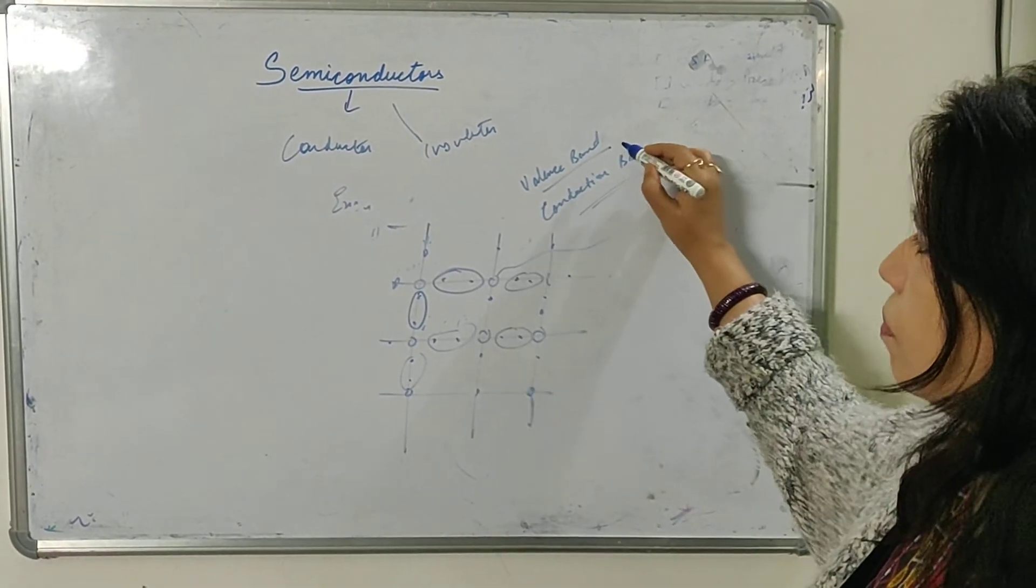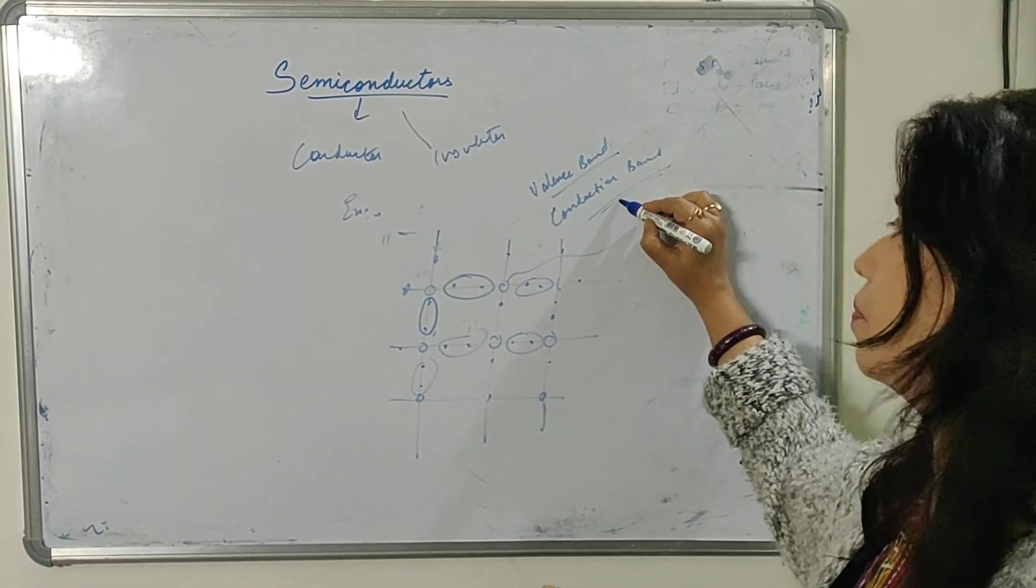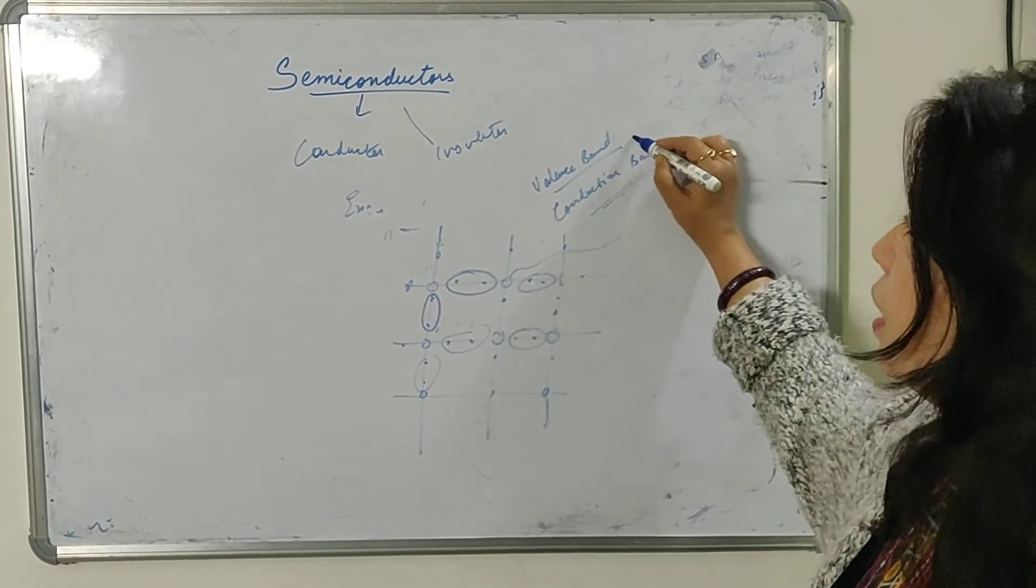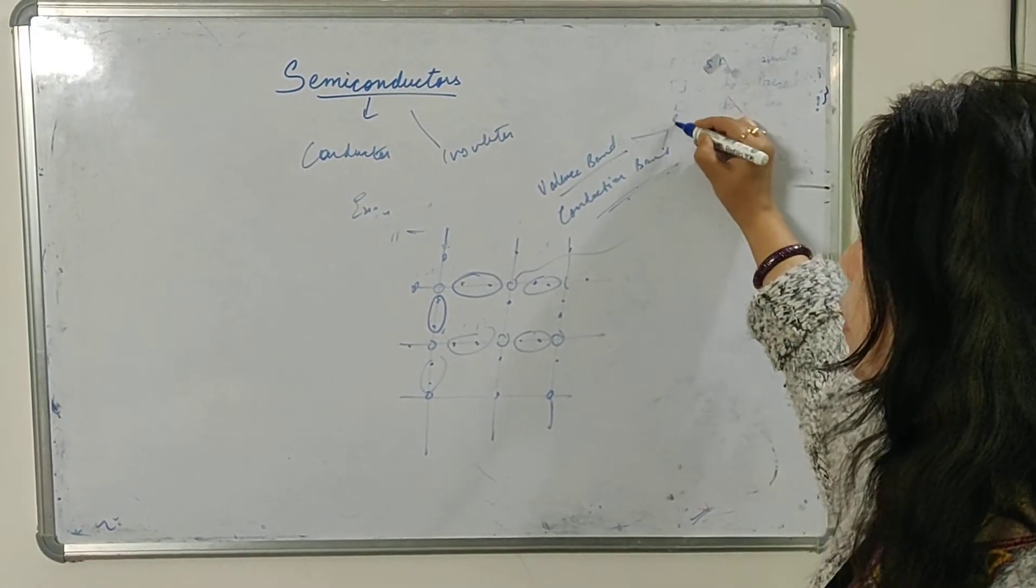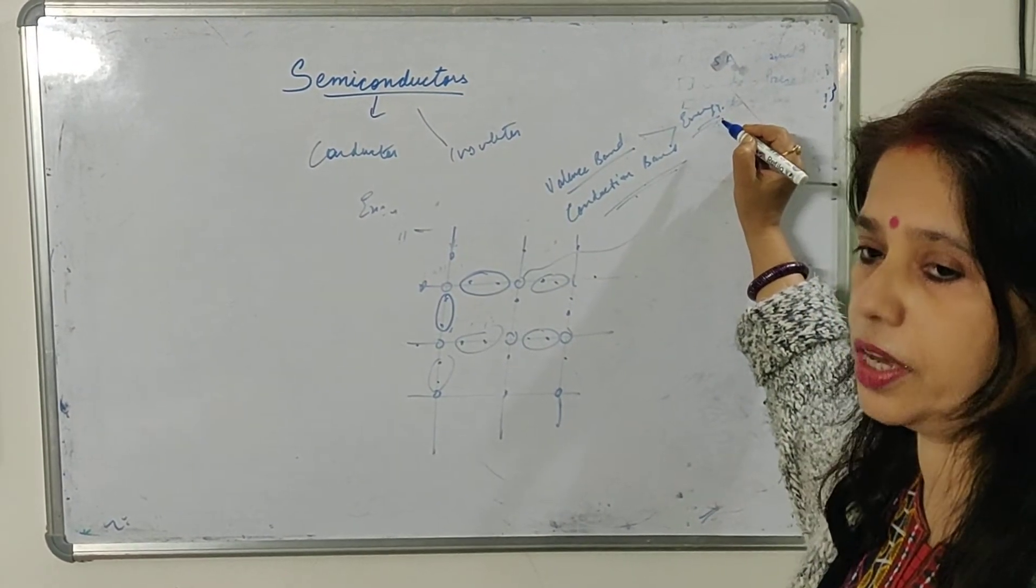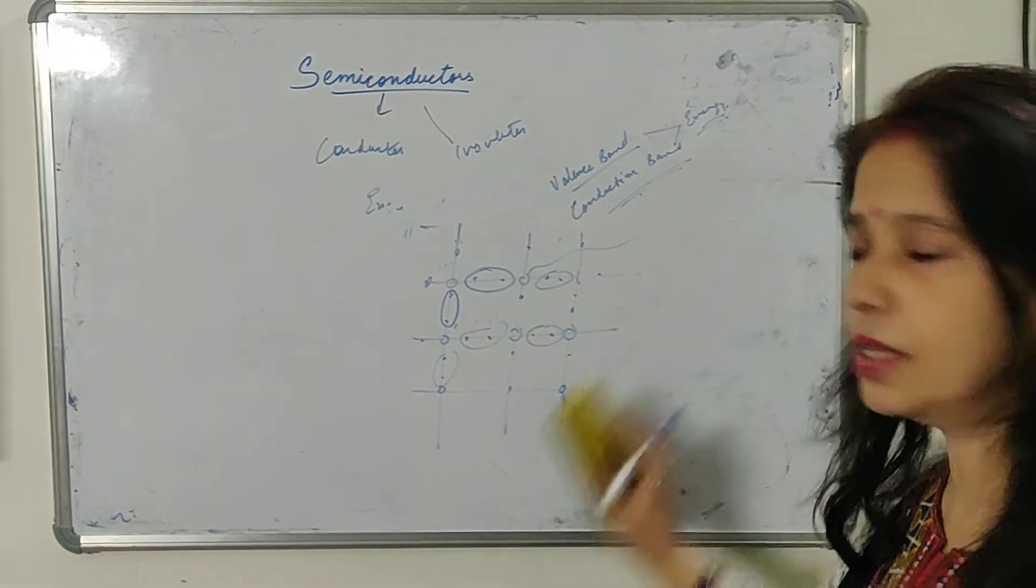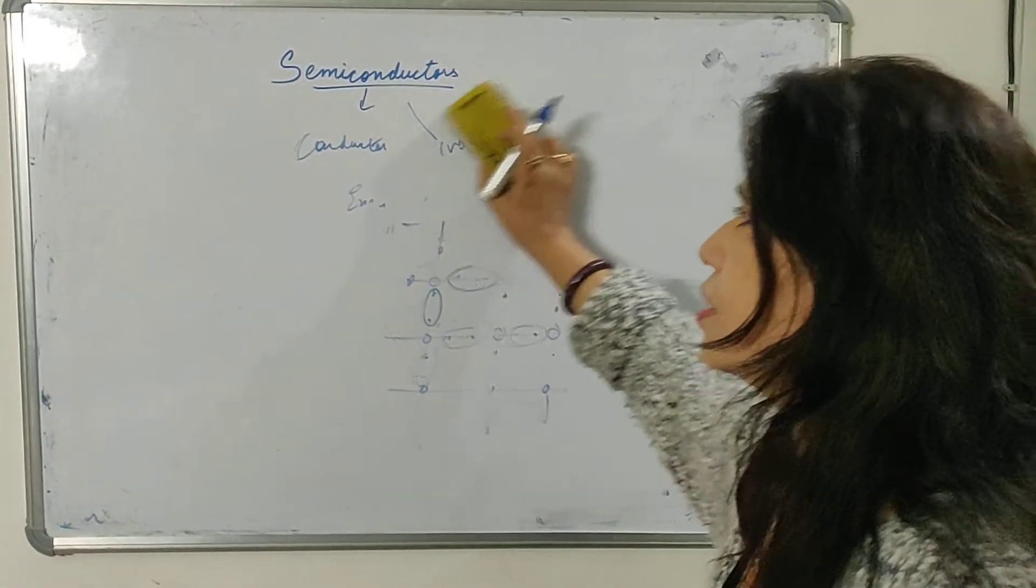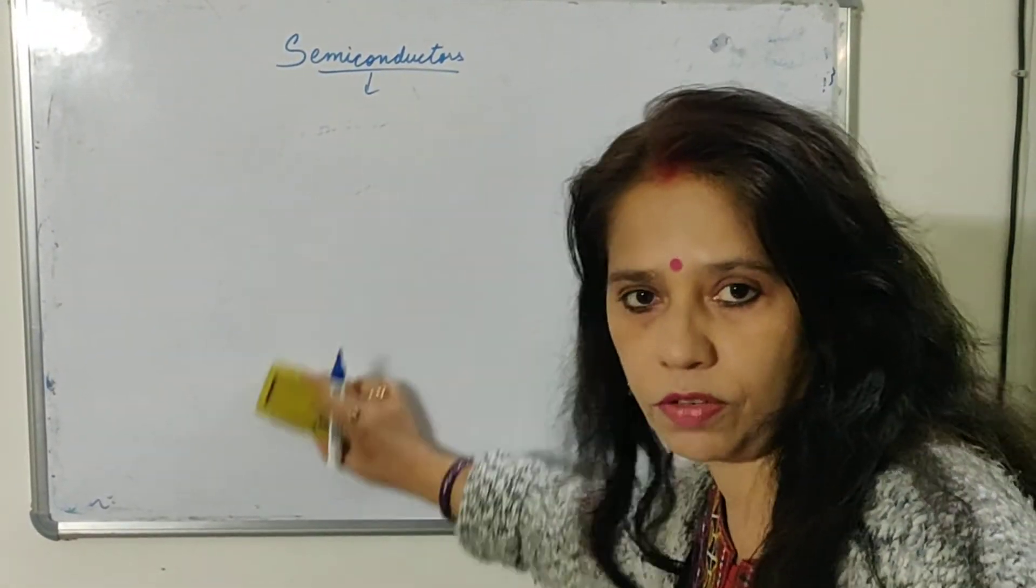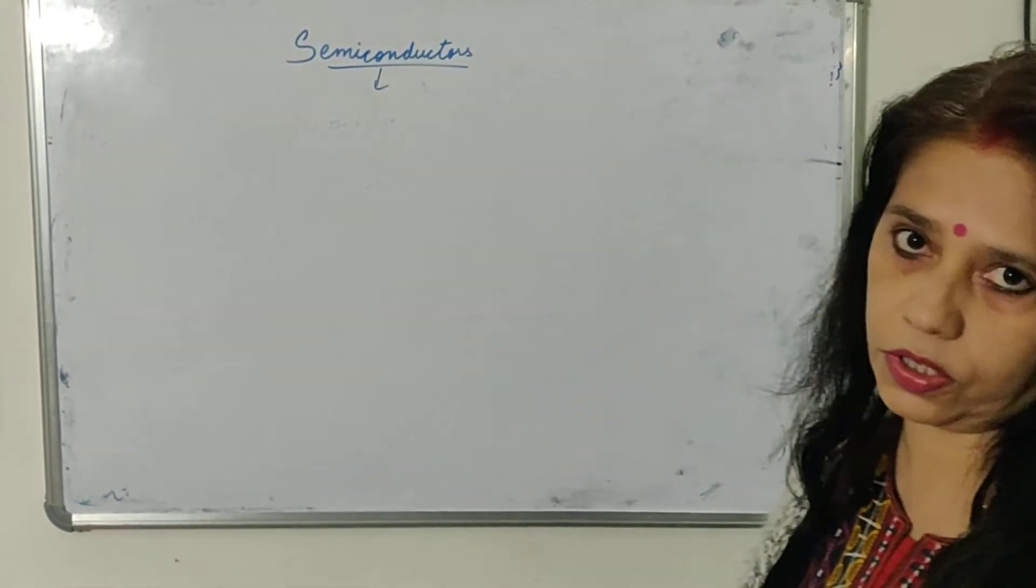Just now I talked about the energy. I told you that the conduction band, they are having more energy as compared to the valence band. It signifies here that there must be some energy gap between these two bands. So on the basis of energy gap, which is called forbidden energy gap, we will be differentiating between metals or conductors, semiconductors and insulators. And let me tell you children, this is an important question for CBSE 2020-21 board.